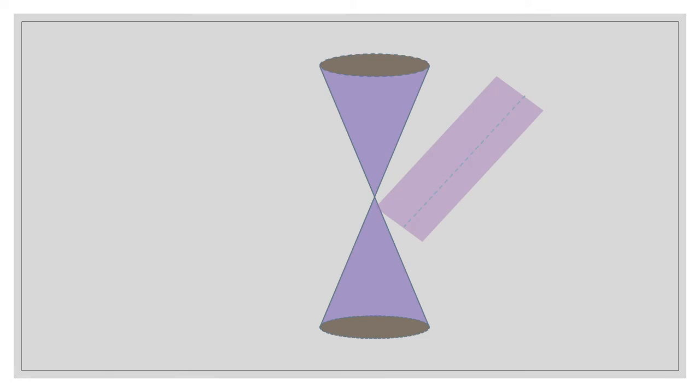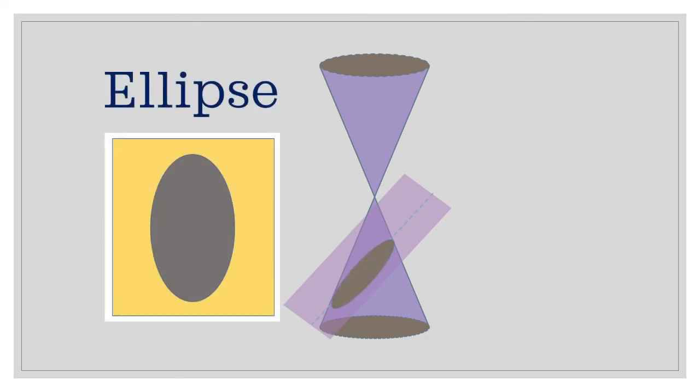Now, let's tilt the plane at a certain angle. The intersection formed would be an ellipse.